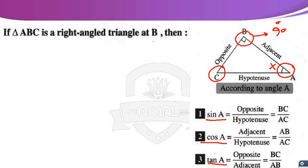Line segment CB is the opposite of angle A. For angle A in the right-angled triangle at B, there are three sides: opposite, adjacent, and hypotenuse. The hypotenuse is the line segment opposite the right angle. The opposite of angle A is line segment CB, and the adjacent of angle A is line segment BA. Therefore, sine A equals opposite over hypotenuse, which is BC over CA.